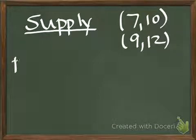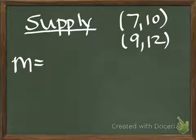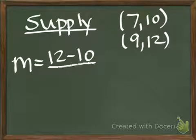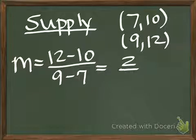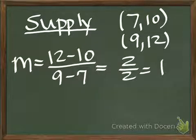Again, first, I'm going to find my slope by looking for my change in P. So, 12 minus 10 over my change in Q, 9 minus 7. So, I get 2 over 2, or a slope of 1.